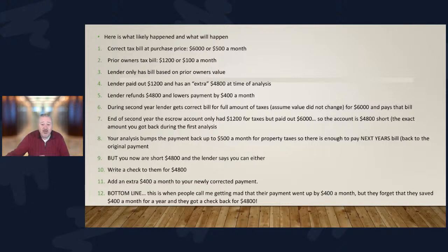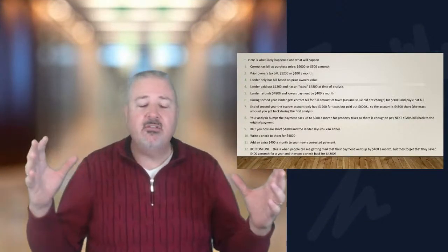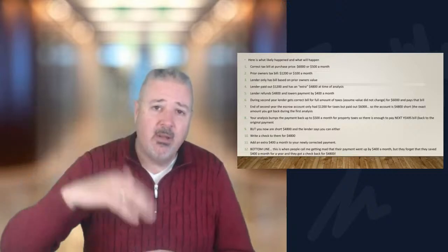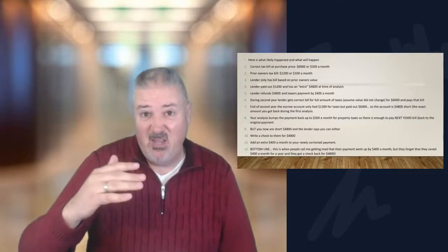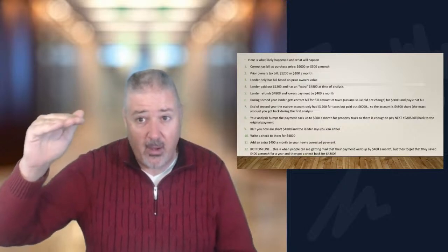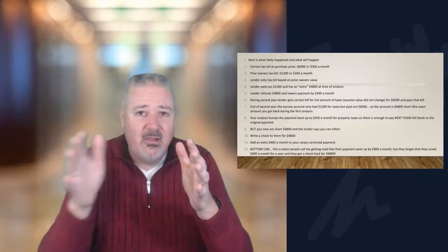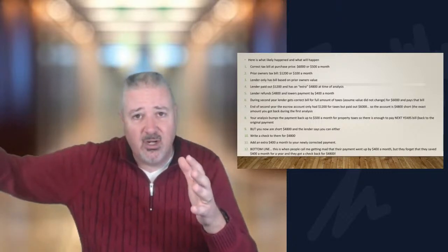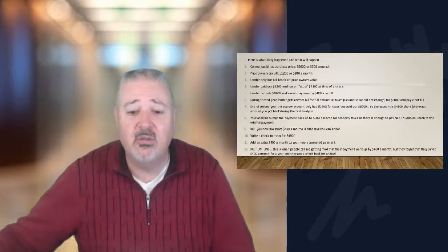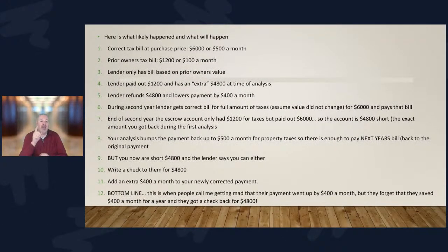So the analysis bumps the payment back up to where it belongs. But we also have to make up the $4,800 shortfall. Your payment was supposed to be $500 a month for taxes. After the first-year analysis, we lowered it to $100. At the end of the second year we say, 'We realize it should be $500' — but we're also owed the $4,800 extra we paid. That's what freaks everybody out.